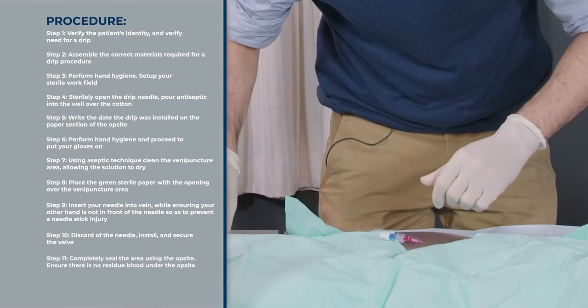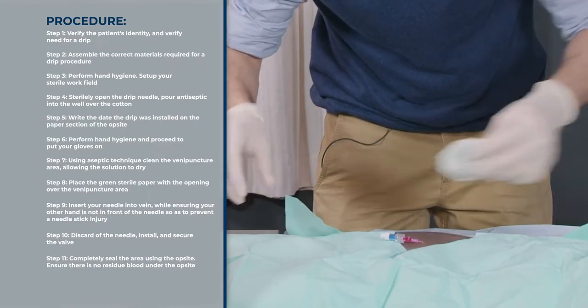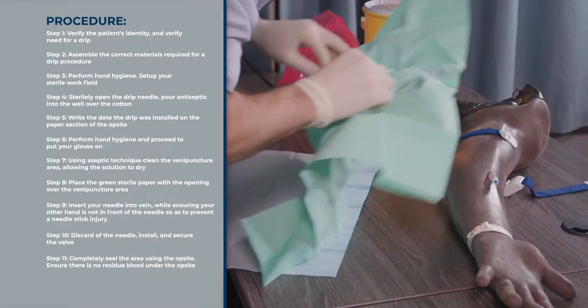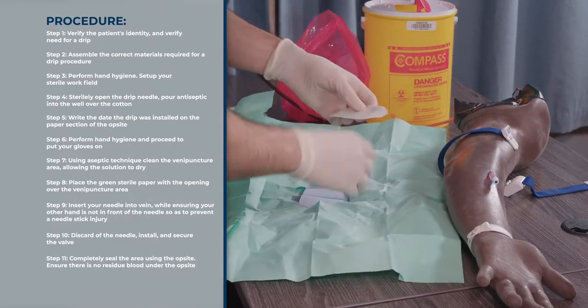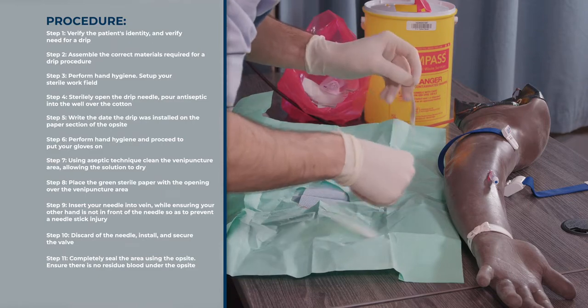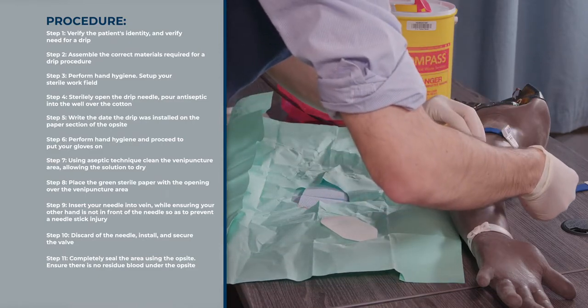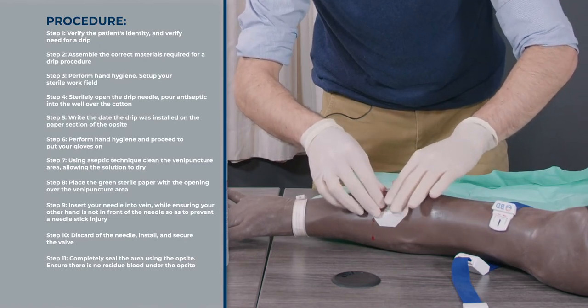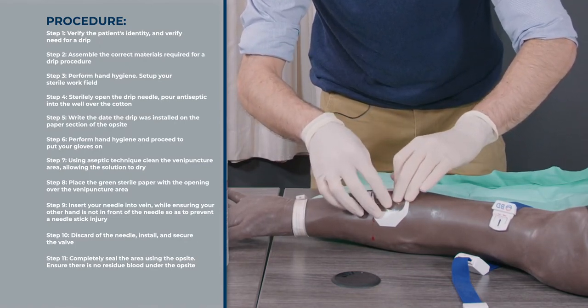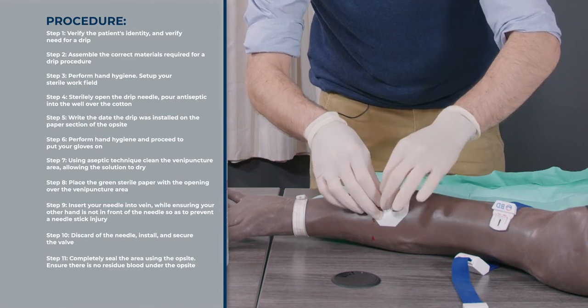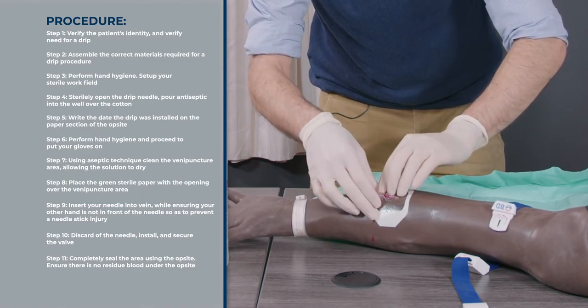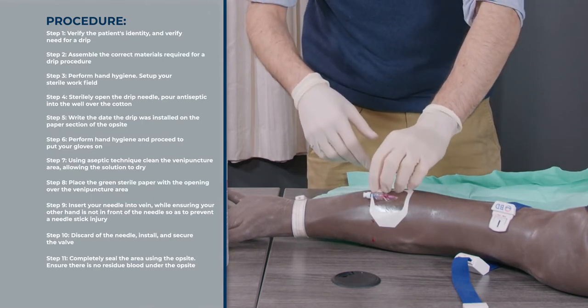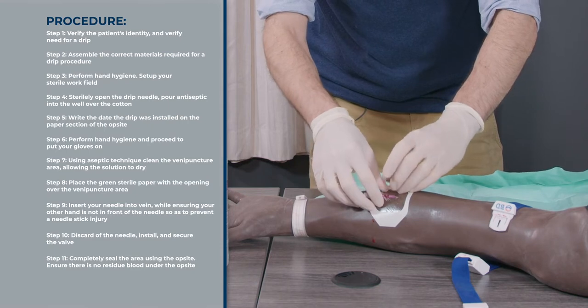Then you can put your valve on top and secure it into that area. Then you're going to put your op site over the area. Make sure there's no blood spilt on the sides because the risk is that bacteria like blood and can start to proliferate underneath. It's important that you completely seal the area so that water or other liquid material doesn't get underneath.